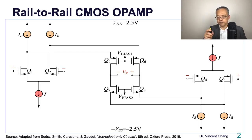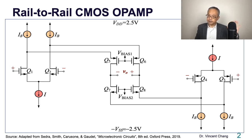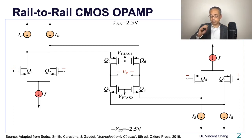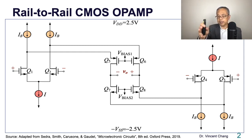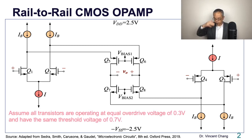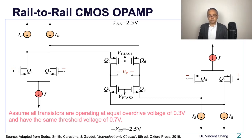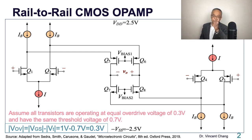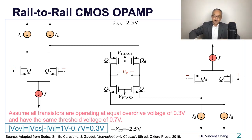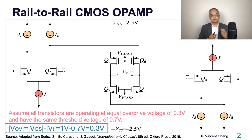This is the circuit we studied in the previous lecture, which is called the Rail-to-Rail CMOS op-amp. The left-hand side is developed by an NMOS input differential stage, and the right-hand side is developed by a PMOS input differential stage. Because we are going to do some calculation, let me give you some data. Assume all transistors operating at equal overdrive voltage of 0.3V and have the same threshold voltage of 0.7V. The overdrive is defined as |VGS - VT|, so 1 - 0.7 = 0.3.